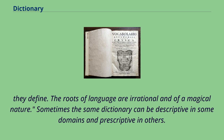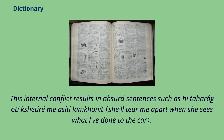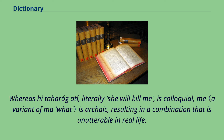Sometimes the same dictionary can be descriptive in some domains and prescriptive in others. For example, according to Gilad Zuckermann, the Oxford English-Hebrew Dictionary is at war with itself: whereas its coverage and glosses are descriptive and colloquial, its vocalization is prescriptive. This internal conflict results in absurd sentences, resulting in a combination that is unutterable in real life.